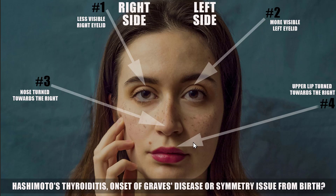Hey everybody. So what are we looking at here? Well, we may be looking at Hashimoto's thyroiditis, we may be looking at an onset of Graves' disease, we may be looking at symmetry issues that occurred from birth.